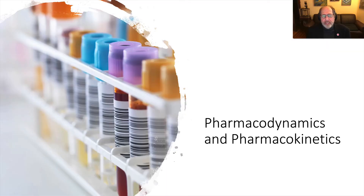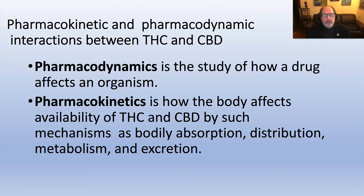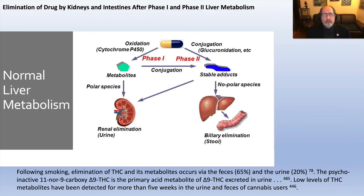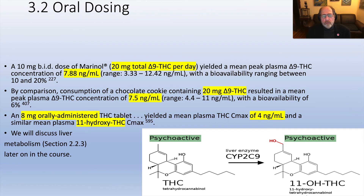We'll take a break from medicinal use and go back to pharmacodynamics and pharmacokinetics — explaining what they are and how cannabinoids act upon the receptors in the body, where the CB1 and CB2 cannabinoid receptors are located, and the metabolism in the liver, including phase 1 and phase 2 metabolism. We'll also discuss specific cytochrome P450s — a graduate student in my laboratory showed that cytochrome P450 2C9 converts THC to 11-hydroxy THC, which is equally active.